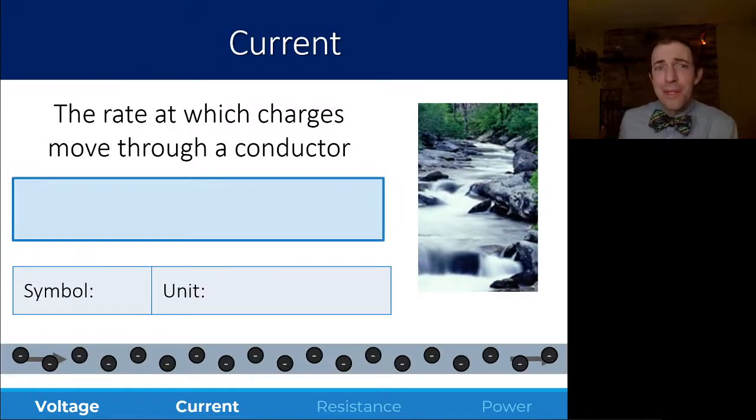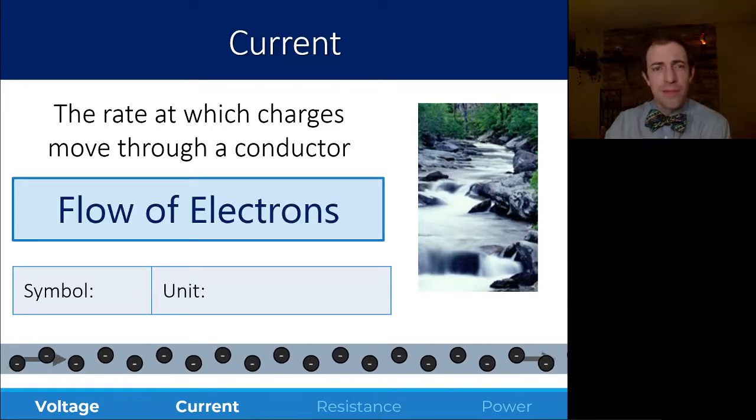Current is going to be the rate at which charges move through a conductor. The charges that are going to be moving, that we'll talk about, are electrons. So when we talk about current, we're talking about a flow of electron charges through some sort of conductor. Current is the same word that we use to describe the flow of other things as well. Like you could talk about the current through a river, and we'll use that analogy of water flowing later on to talk about current, which is something that we can't see, and comparing it to something that we can.